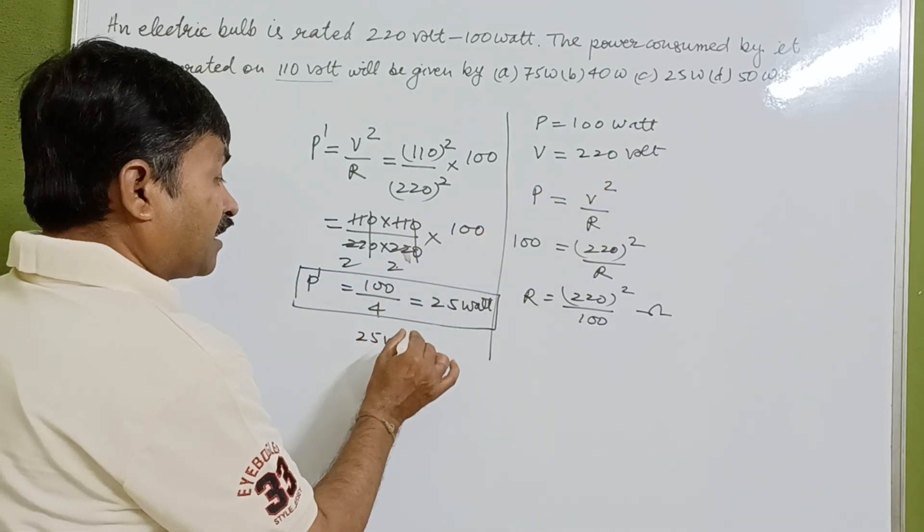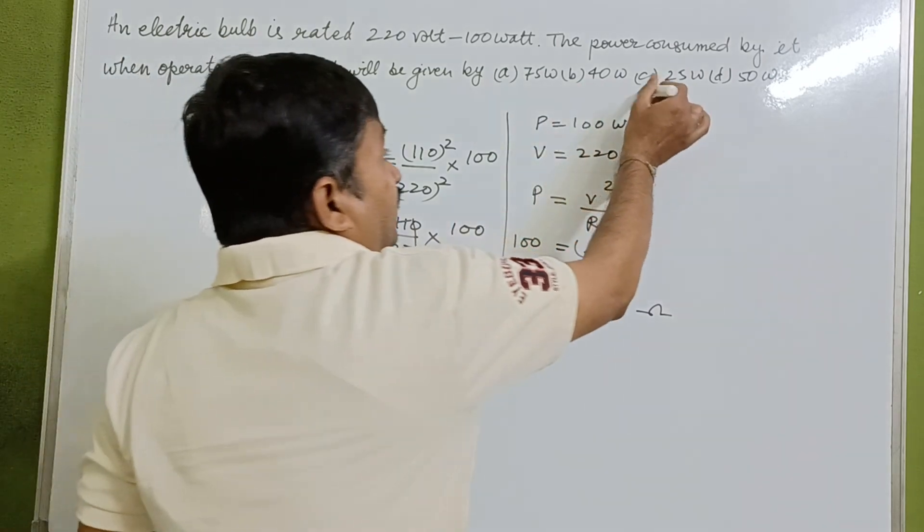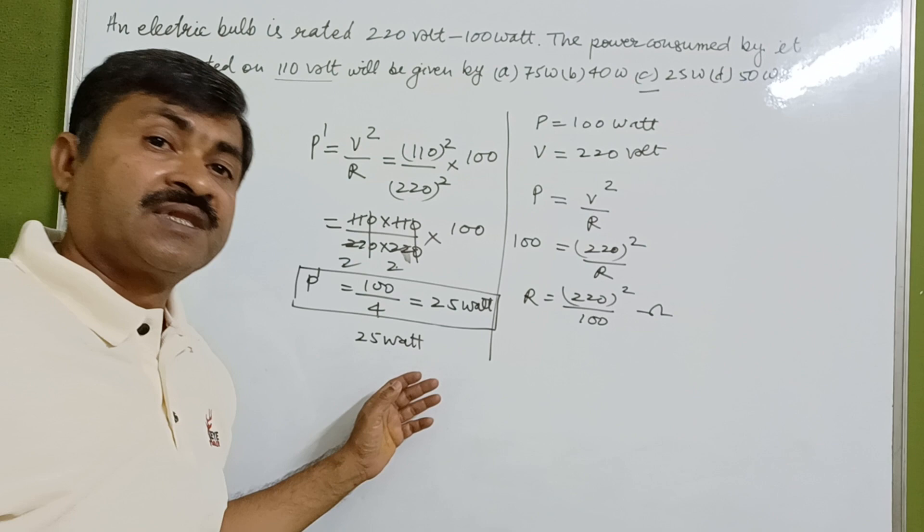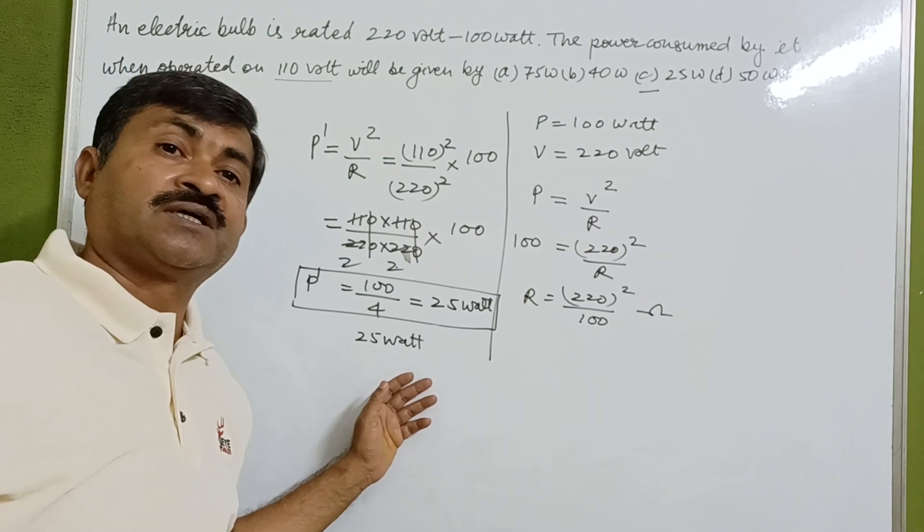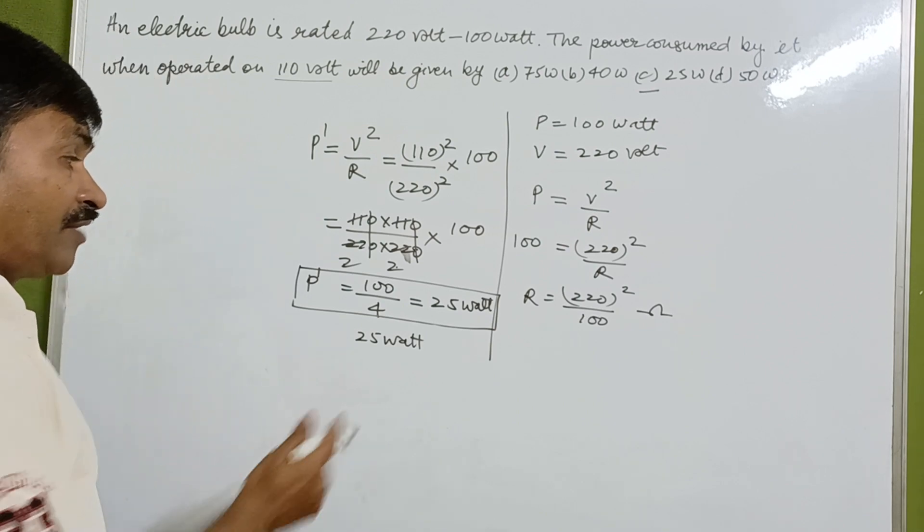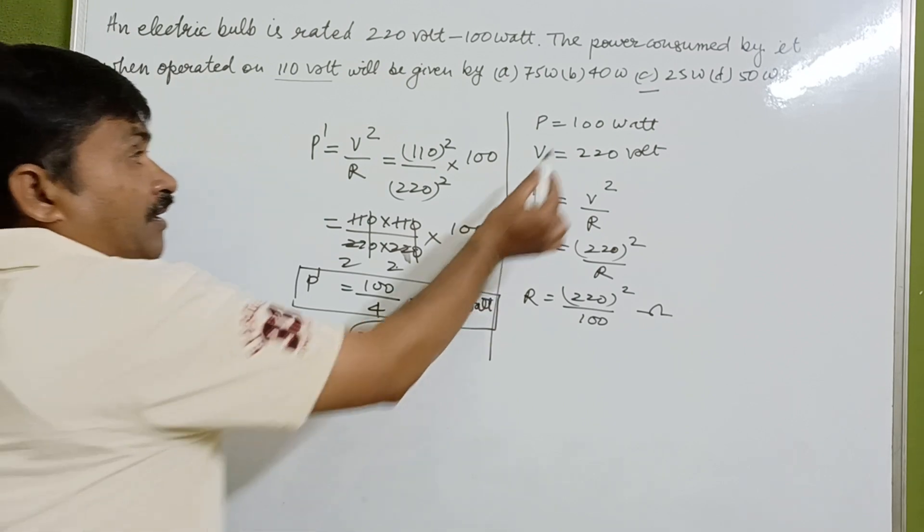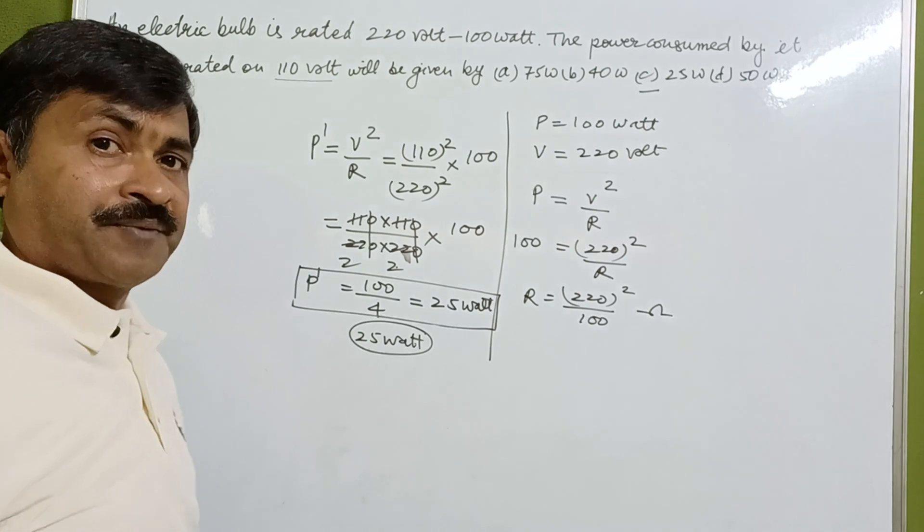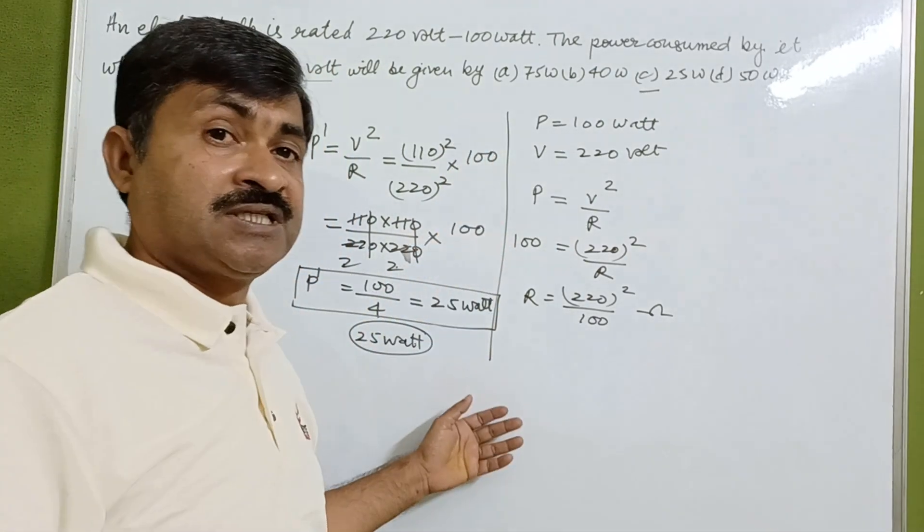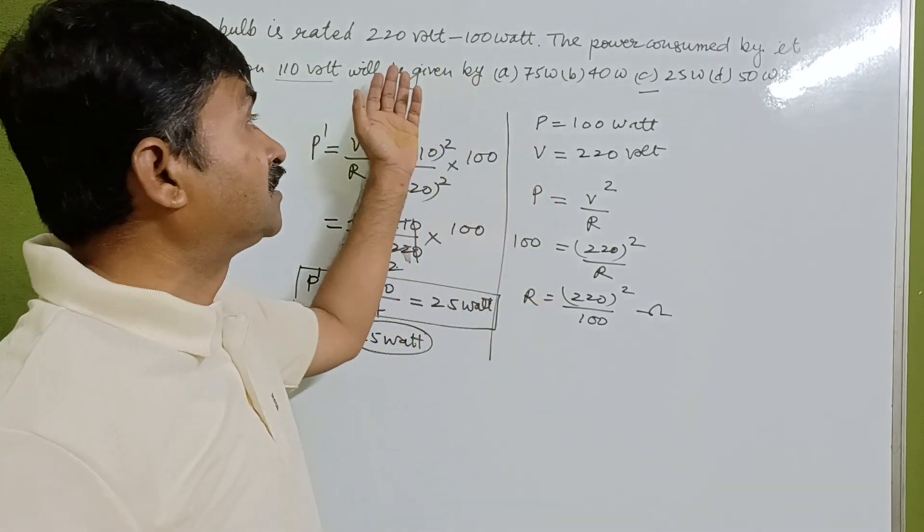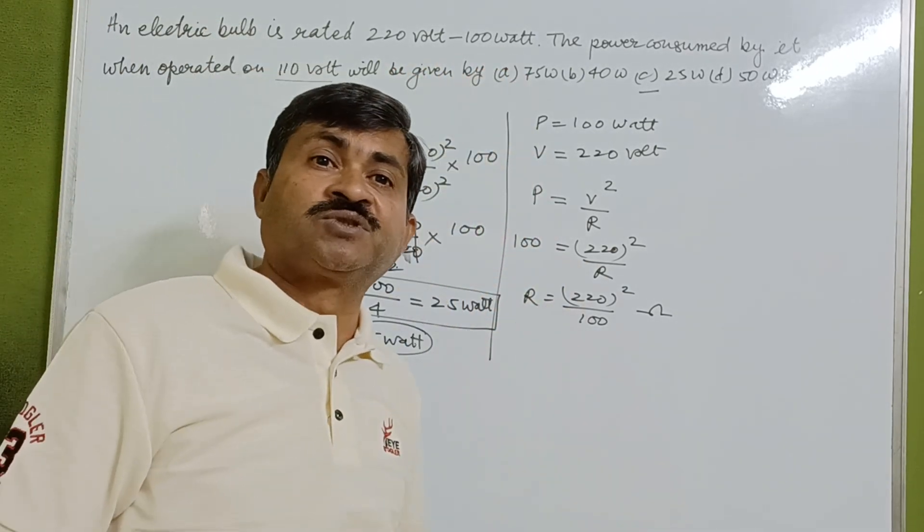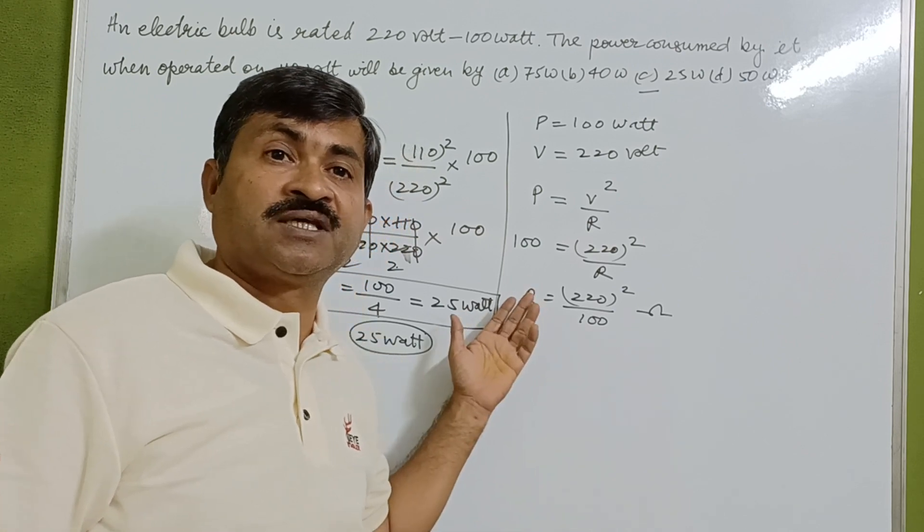So 25 watt is the correct option for this question. You have 25 watt compared to 100 watt, which means one-fourth reduction when the electric supply is reduced.